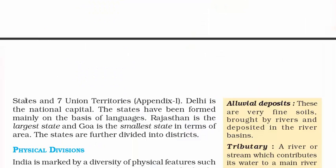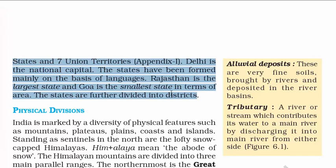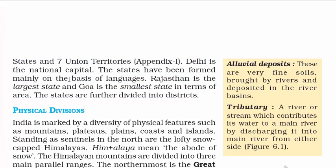Actually it's 29 states. The 29th state is Telangana, which was formed in 2014. Delhi is the national capital. States have been formed mainly on the basis of languages. Rajasthan is the largest state and Goa is the smallest state in terms of area. Details about how and when states came into existence will be covered in the political science section later.